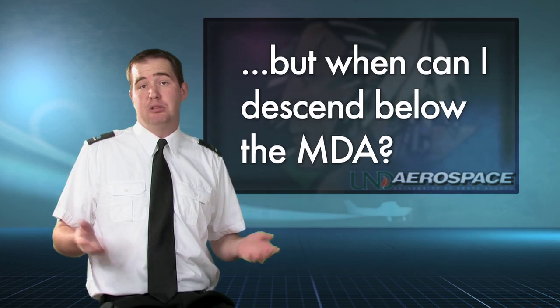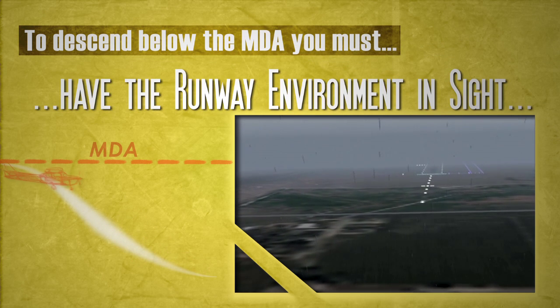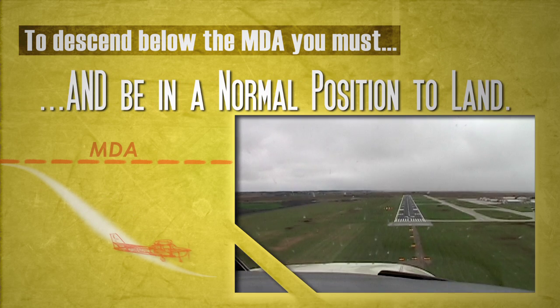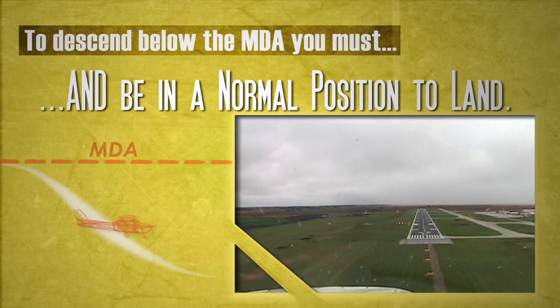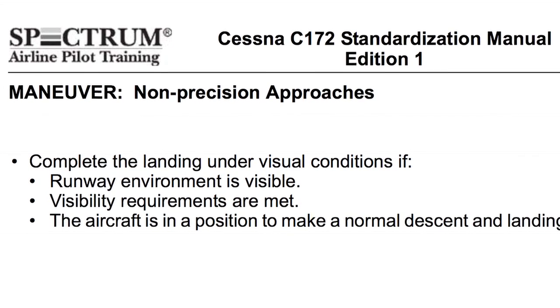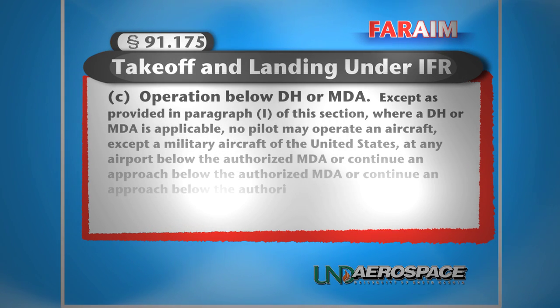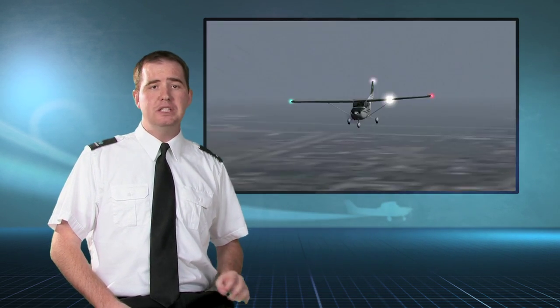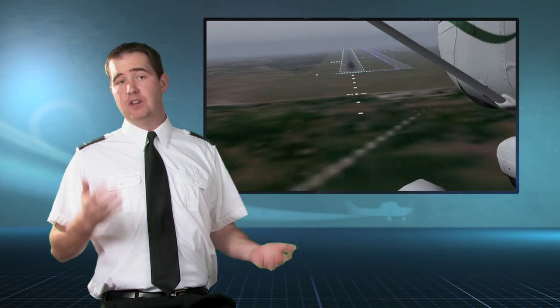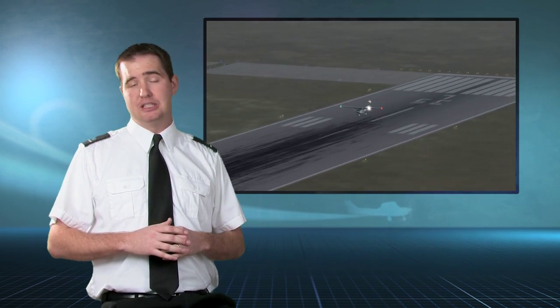The pilot may only descend below the MDA if the following criteria are met: the runway environment is visible, visibility requirements are met, and the aircraft is in a position to make a normal descent and landing. These requirements are listed in the UND Cessna 172 Standardization Manual and are required by FAR 91.175. Once the pilot has met the listed criteria, she should reduce airspeed below 85 knots and set the flaps to full, maintaining visual contact with the runway environment and flying a stabilized approach until touchdown.